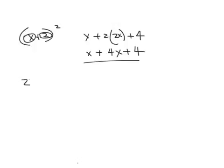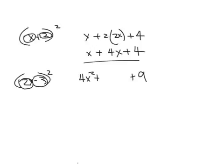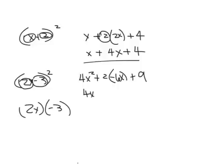Let's try 2x minus 3, quantity squared. Take the first term: 2x times 2x is 4x squared. Last term: negative 3 times negative 3 is 9. Now take 2x times negative 3, don't forget the negative, that's negative 6x, and multiply by 2 to get negative 12x. So the answer is 4x squared minus 12x plus 9.